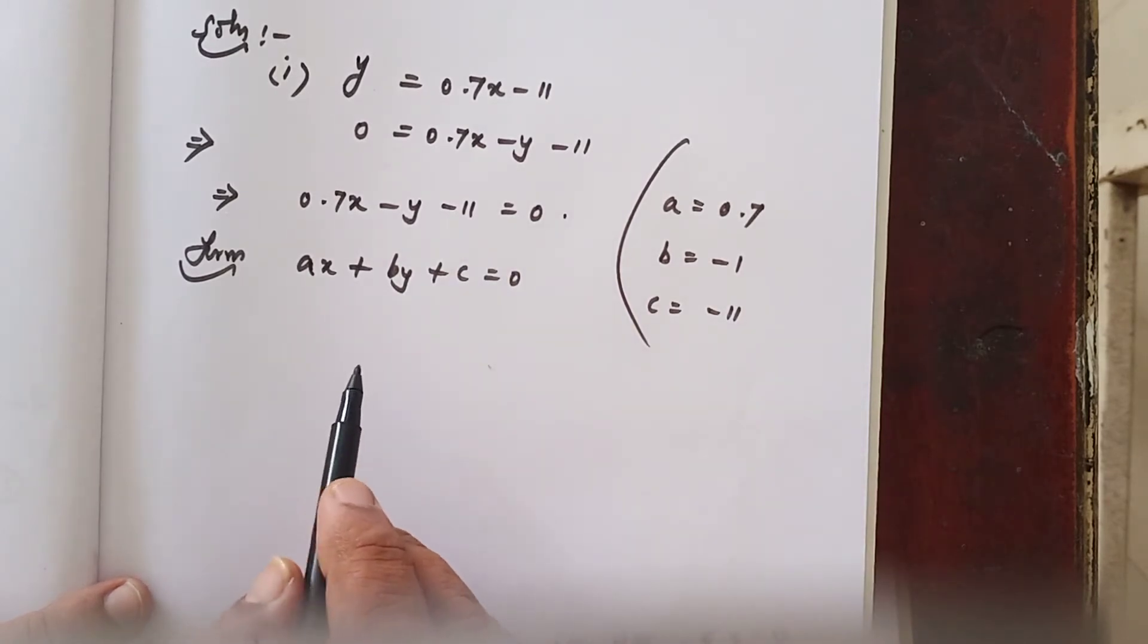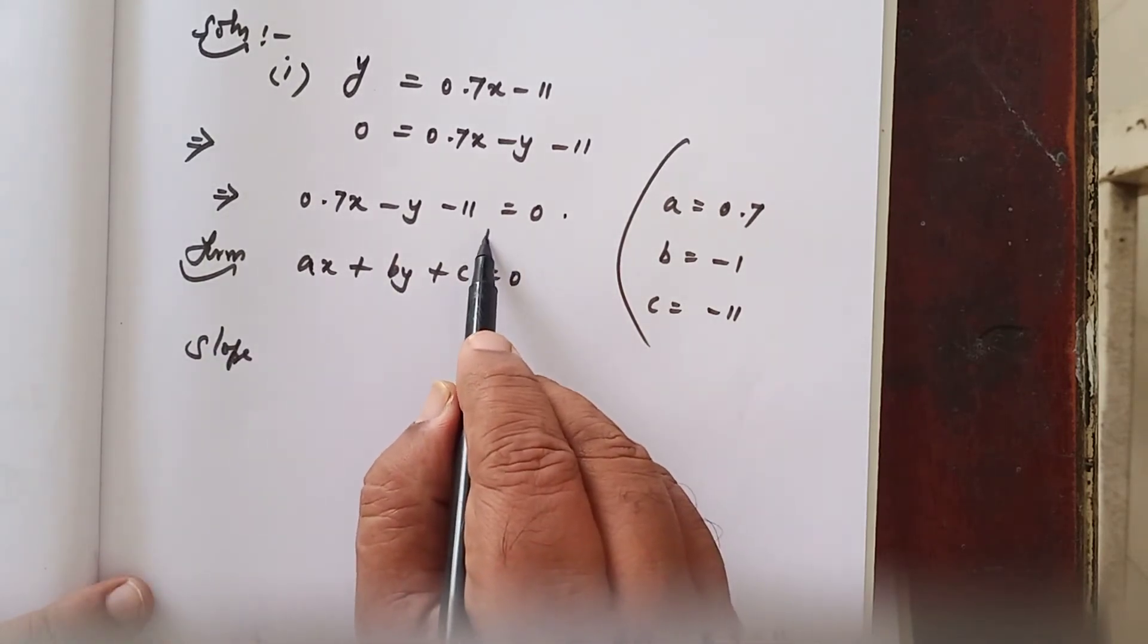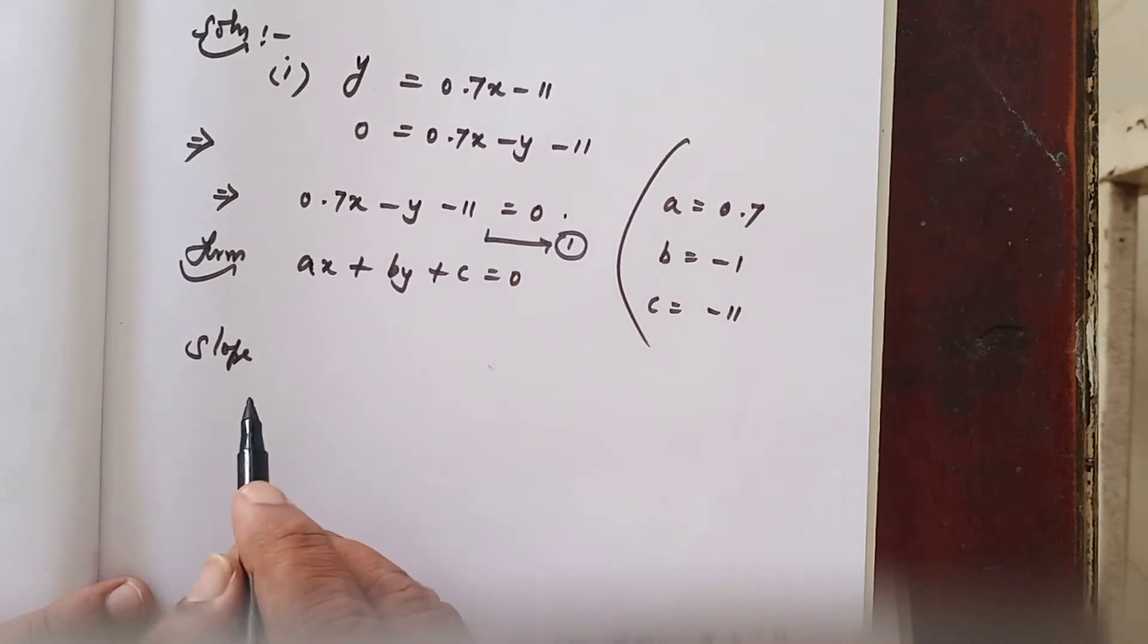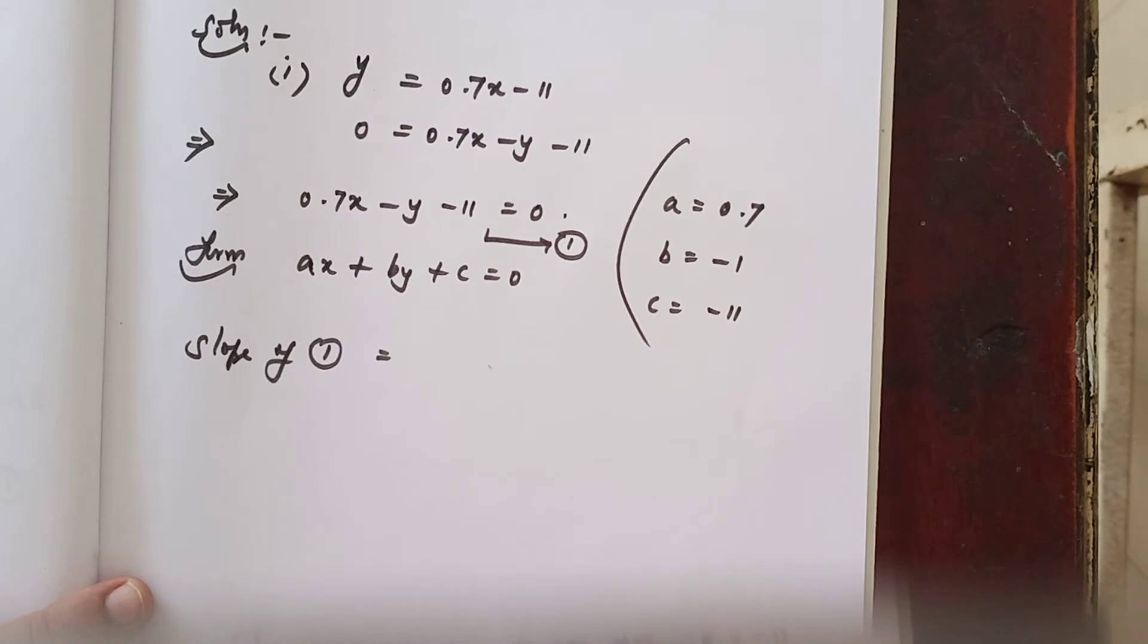First, we can find the slope for the given line. Slope, let it be equation number 1. Slope of equation 1, that is equal to formula.